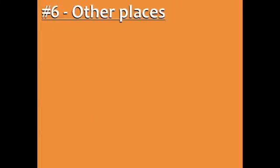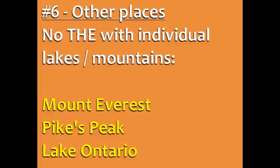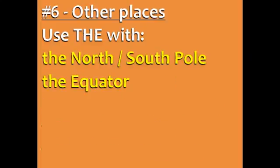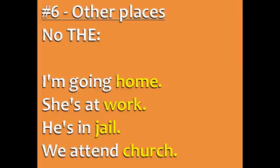With other places it's a little tricky. Don't use 'the' with individual lakes or mountains, like Mount Everest, Pikes Peak, or Lake Ontario. Use 'the' with oceans, rivers, valleys, deserts, and mountain ranges — that's groups of mountains. For example: the Pacific Ocean, the Amazon River, the San Fernando Valley, the Sahara Desert, and the Rocky Mountains, as well as with specific points on the globe like the North Pole, the South Pole, and the equator.